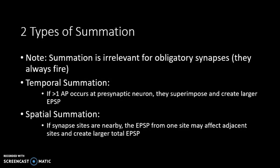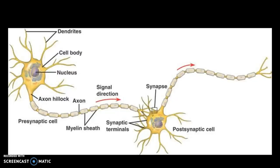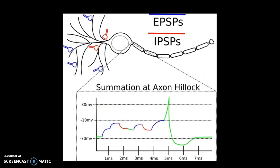With spatial summation, a longer neuron with more synaptic inputs increases the ability to trigger an action potential. Multiple synapses along the dendrites contribute EPSPs and IPSPs that must collectively reach threshold before the signal reaches the axon hillock, which is where the action potential is triggered.